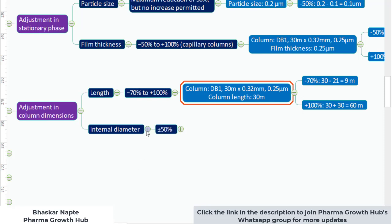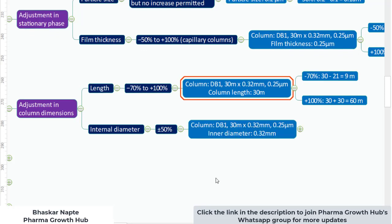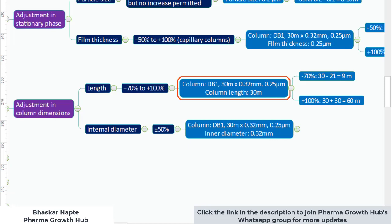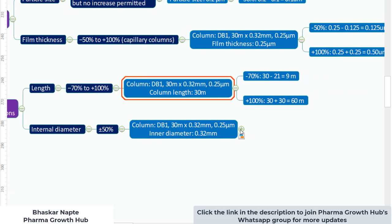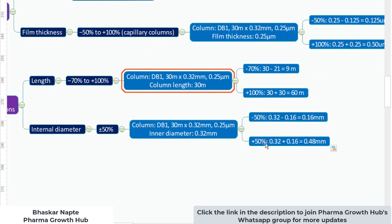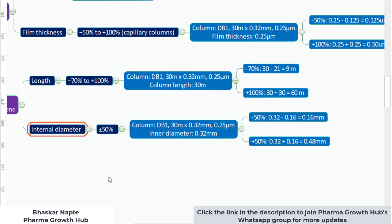For internal diameter, the allowable adjustment is plus or minus 50%. If the internal diameter is 0.32 mm, then minus 50% gives 0.16 mm and plus 50% gives 0.48 mm. So the allowable range for variation or adjustment in inner diameter is 0.16 mm to 0.48 mm.